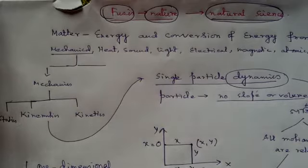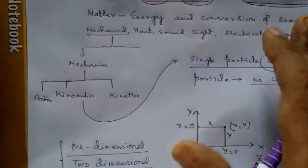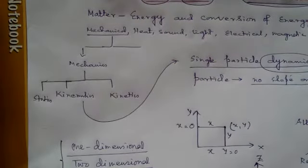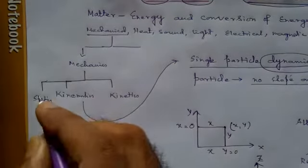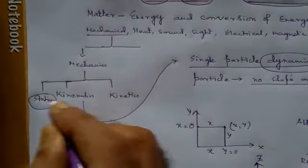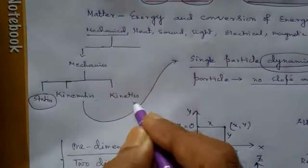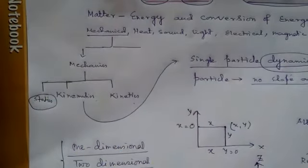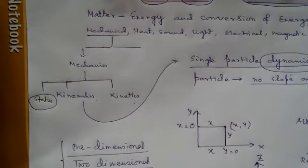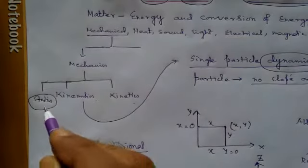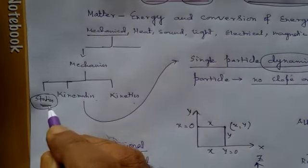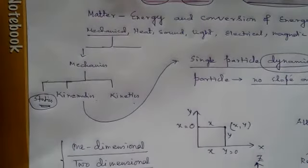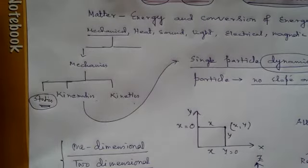There are 3 branches of mechanics. Number 1 is statics, number 2 is kinetics, and number 3 is kinetics. In this case, what do you do with statics? Statics is about a full amount of weight.